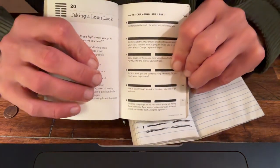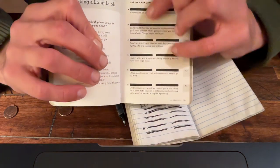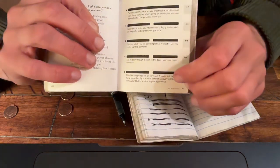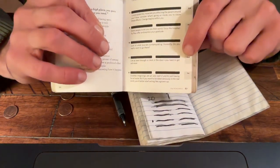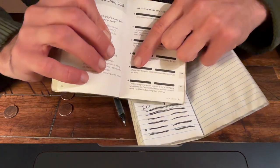And then these are the changing lines. You'll read these for whichever ones you have, so this is 1st, 2nd, 3rd, 4th, 5th, 6th. We have the second changing line, so we'll read this one.